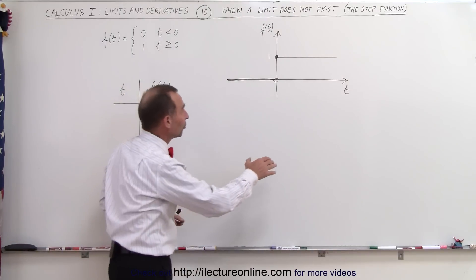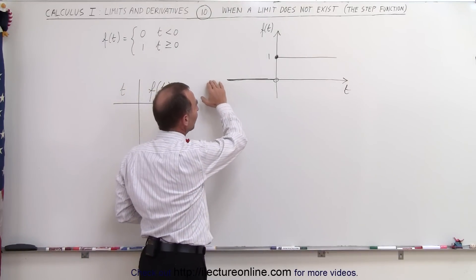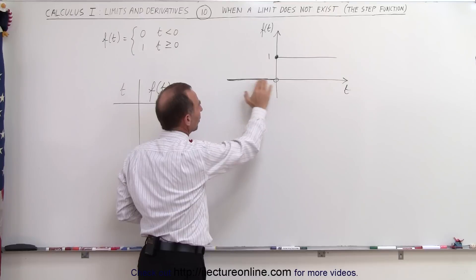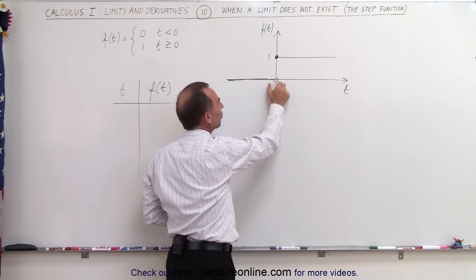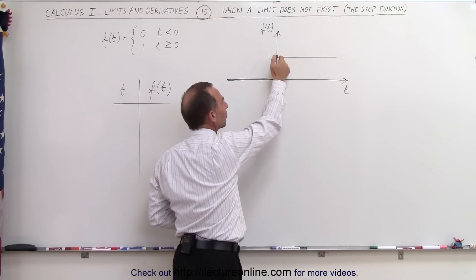Graphically, the function looks as follows. You can see that f is equal to 0 when t is less than 0, but then when t becomes 0 or greater than 0, it jumps to 1.